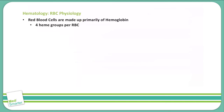The physiology of red blood cells: they're primarily made up of hemoglobin, as we talked about earlier. There are four heme groups in each red blood cell. You have normal hemoglobin, which is HbA, HbA2, and HbF. HbF is fetal hemoglobin that you usually only see in a fetus or shortly after birth.